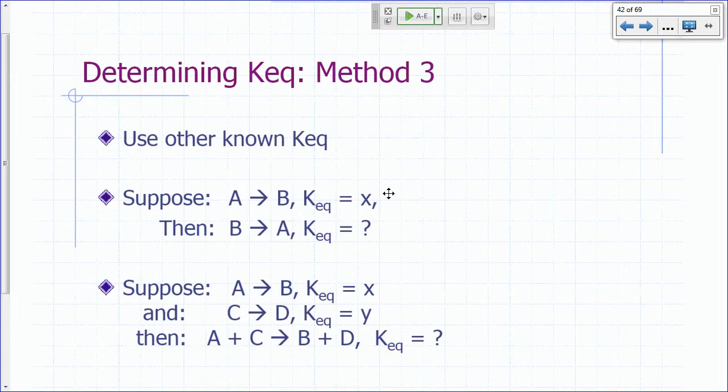Second method is just to run the reaction in the lab. Find a way to measure the activities at equilibrium and then that will give you your equilibrium constant. Just plug it into your expression for the equilibrium constant.